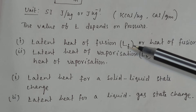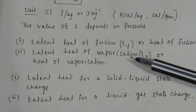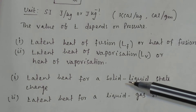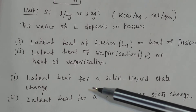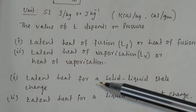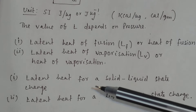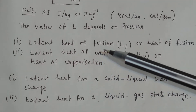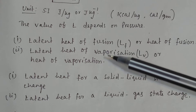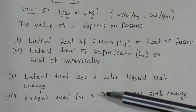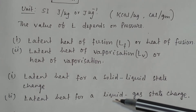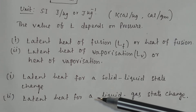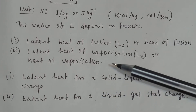When a substance changes from solid state to liquid state, the latent heat is called latent heat of fusion. Similarly, when a substance changes from liquid state to gaseous state, the latent heat is called latent heat of vaporization.